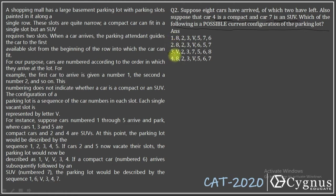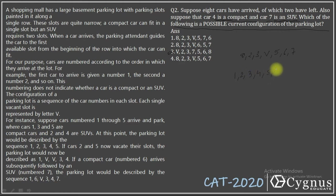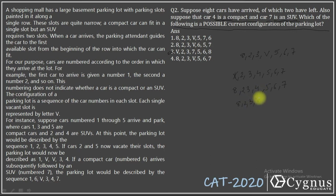I'm left with the 1st, 2nd and 4th options, where 8, 2, 3, V is common. The 4th option says: 8, 2, 3, V, then 5, 6, and 7. We can construct this scenario: initially cars 1 through 7 are parked. Car 1 leaves and car 8 takes its place, giving 8, 2, 3, 4, 5, 6, 7. Then car 4 leaves, giving 8, 2, 3, vacant, 5, 6, 7. So the possible configuration is the 4th option.